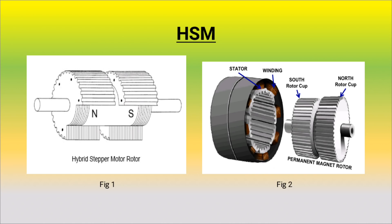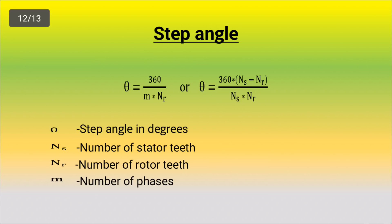The Permanent Magnet Stepper Motor has starting inertia and torque capability. The Hybrid Stepper Motor also has starting inertia. Compared to the Variable Reluctance Stepper Motor and the Permanent Magnet Stepper Motor, the step angle formula is: theta equals 360 divided by m into Nr, where m is the number of phases and Nr is the number of rotor teeth.